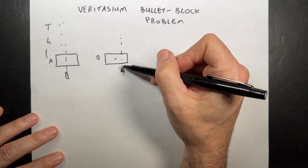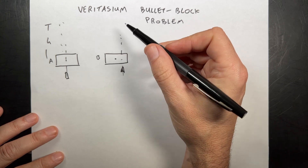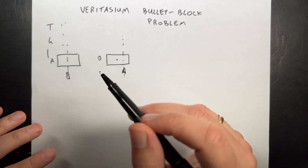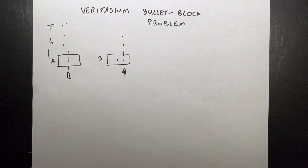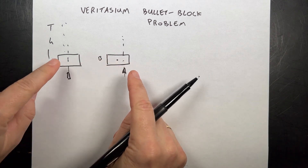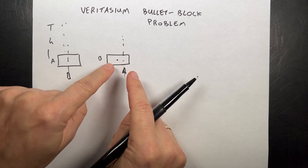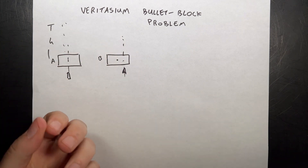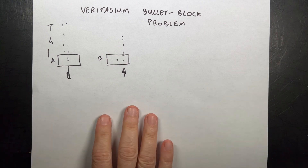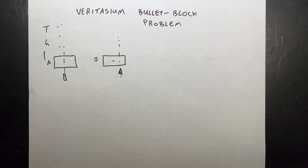We'd all agree that hitting off center will cause it to rotate and go up, but the question is: will it go up higher, the same height, or less height? The common answer is to say it's rotating, so it has rotational energy, meaning it won't go as high because some energy went into rotation. Let's watch the clip — I'll link the full video below — and then I'll explain it in terms of work energy for real versus point particle systems.